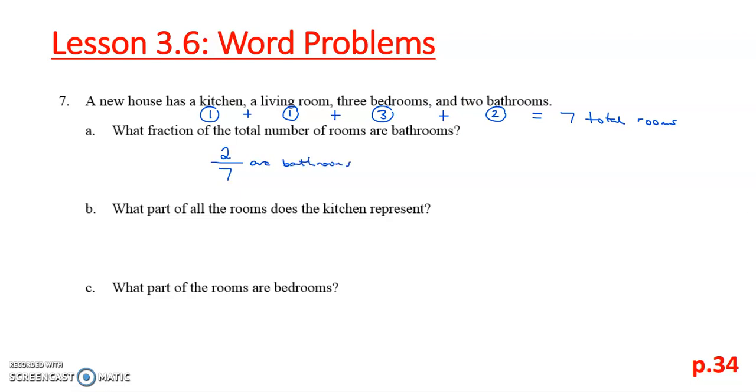When we look at B, what part of all the rooms does the kitchen represent? The kitchen is only one room, and out of all the rooms, there are seven. So one-seventh is the kitchen.